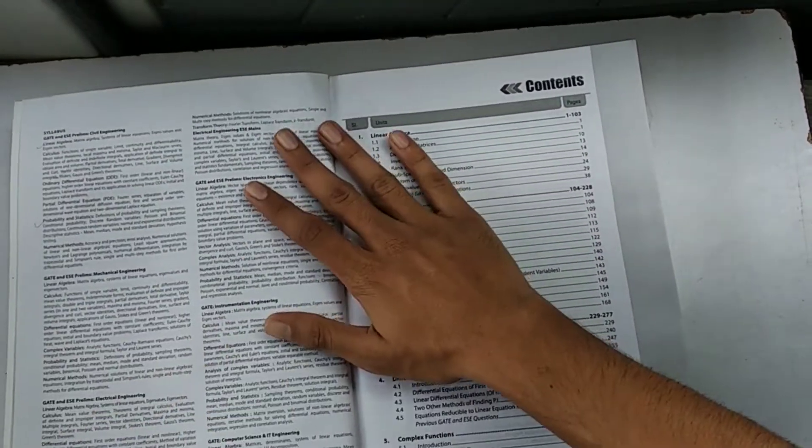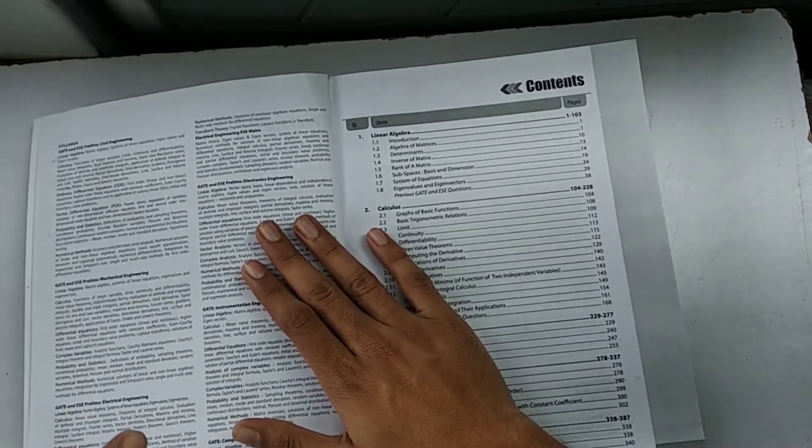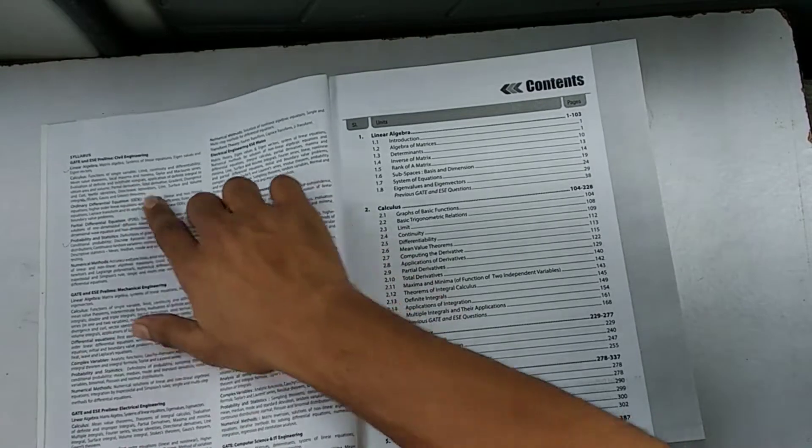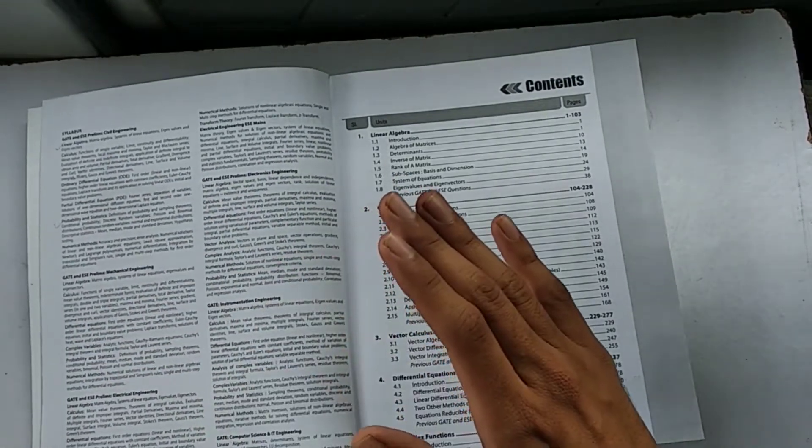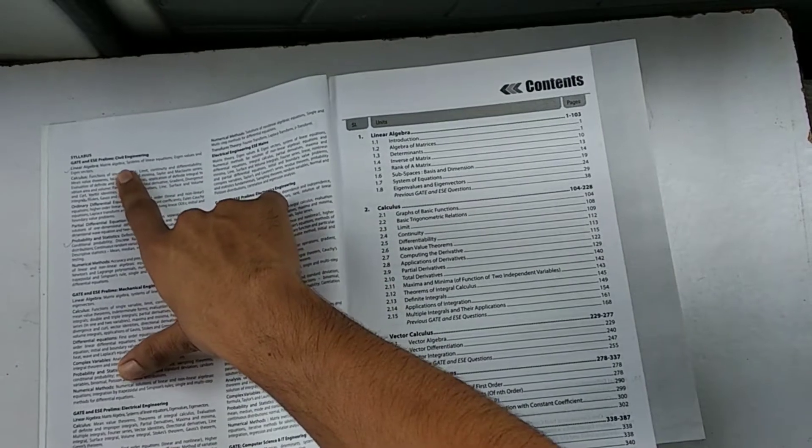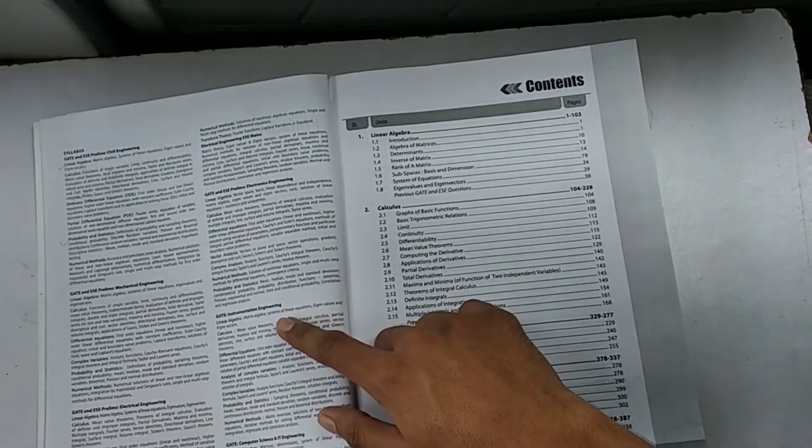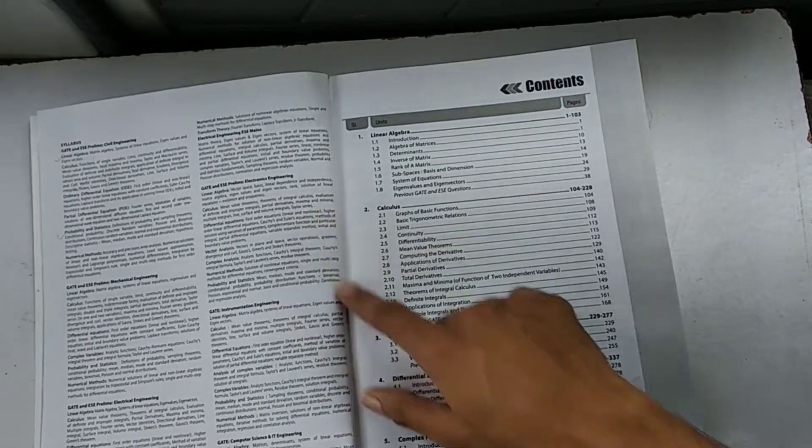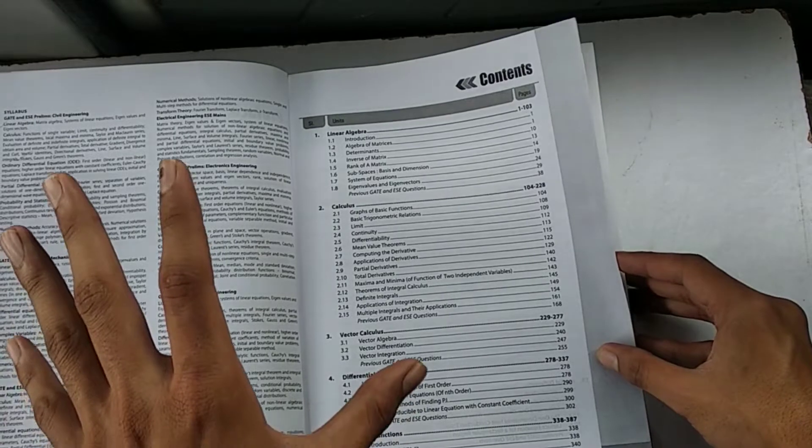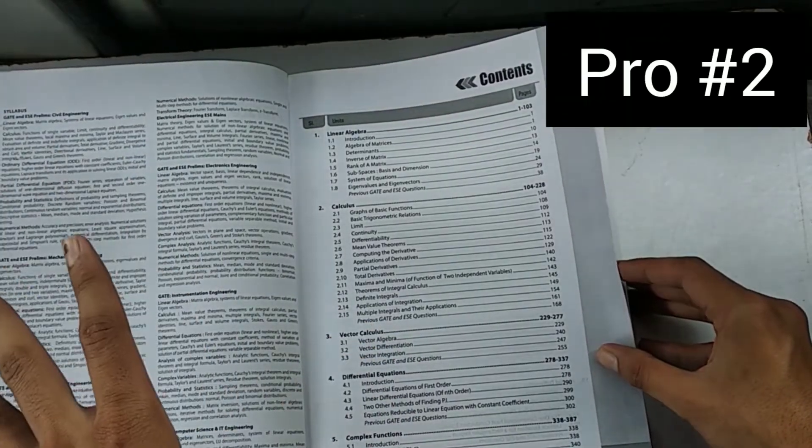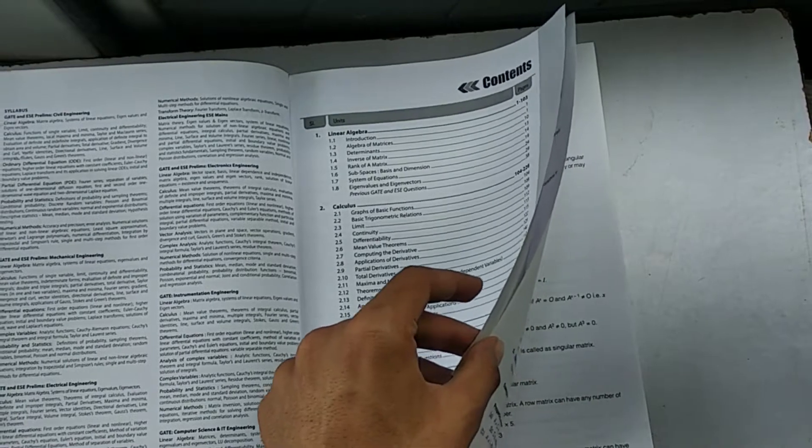Here is the syllabus of Engineering Mathematics. The syllabus for each branch is different, my friends. They have specified the syllabus for Civil, Mechanical, Electrical, Instrumentation Engineering, Electronics, and Communications.